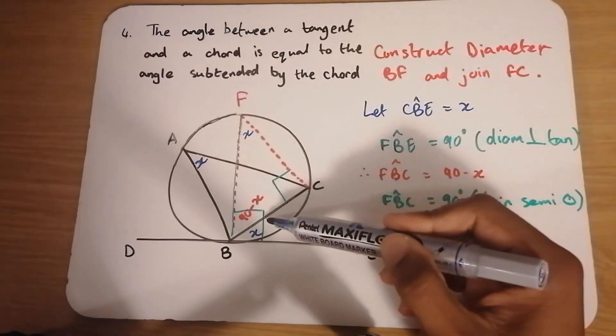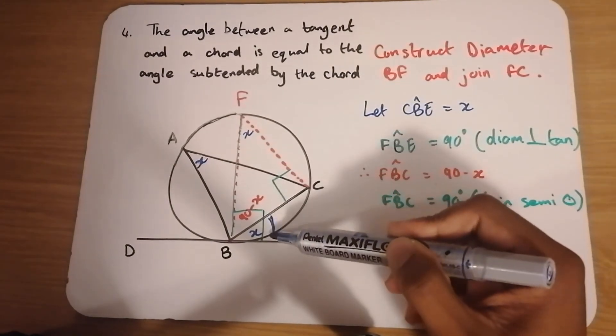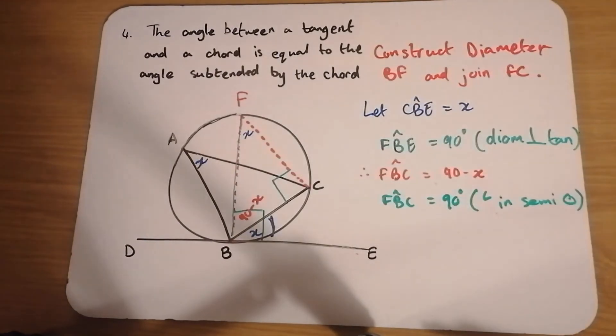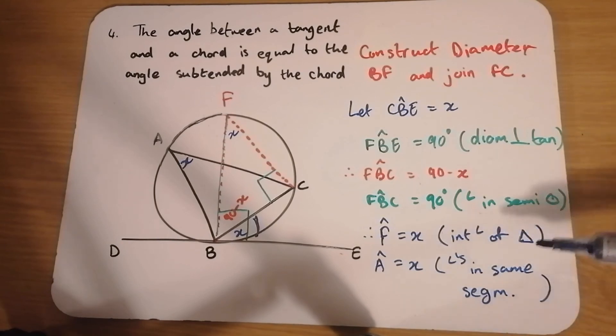And hence, this angle, which we labelled X in the beginning, the angle between the tangent and the chord is equal to the angle subtended by that chord. Just make sure you got your reasons jotted down. And that's it.